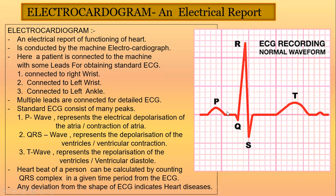Any deviation from the normal curve or shape indicates heart disease. In ECG evaluation, you count the number of QRS complexes in a given time period to assess heart rate.